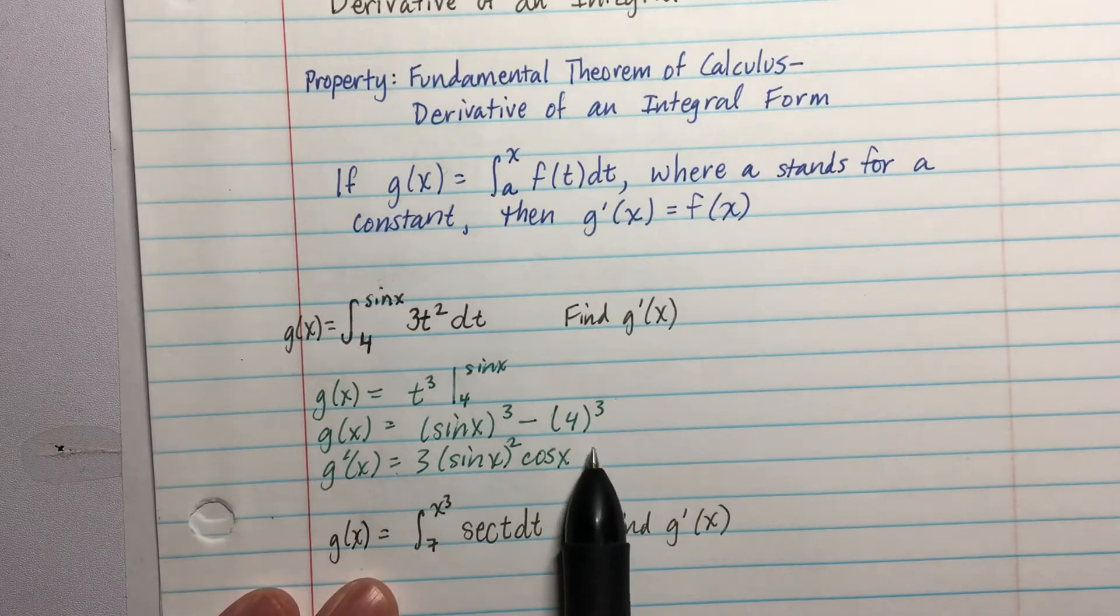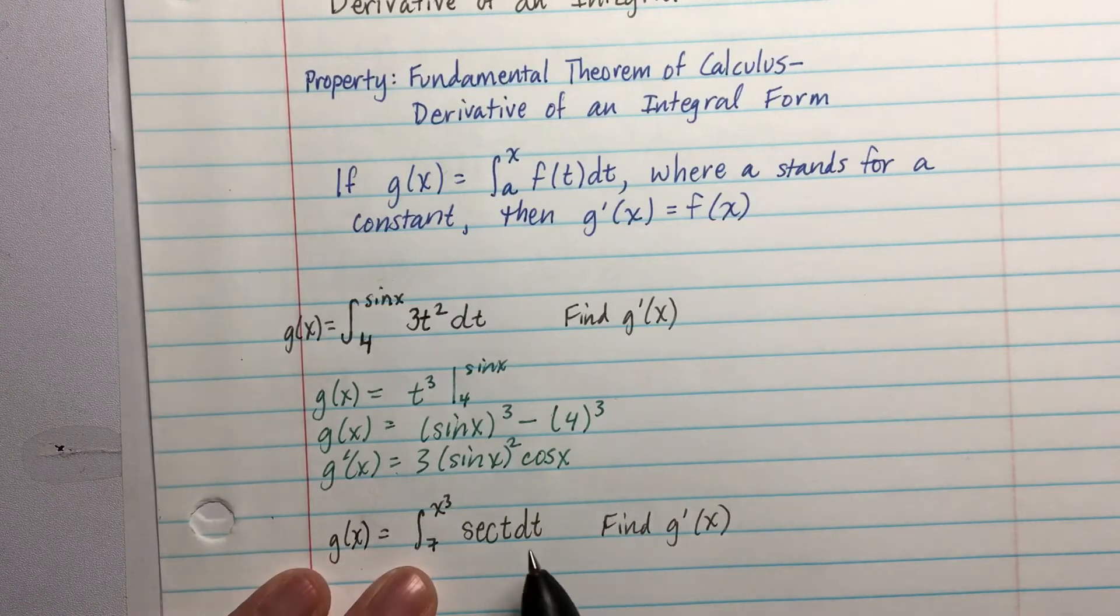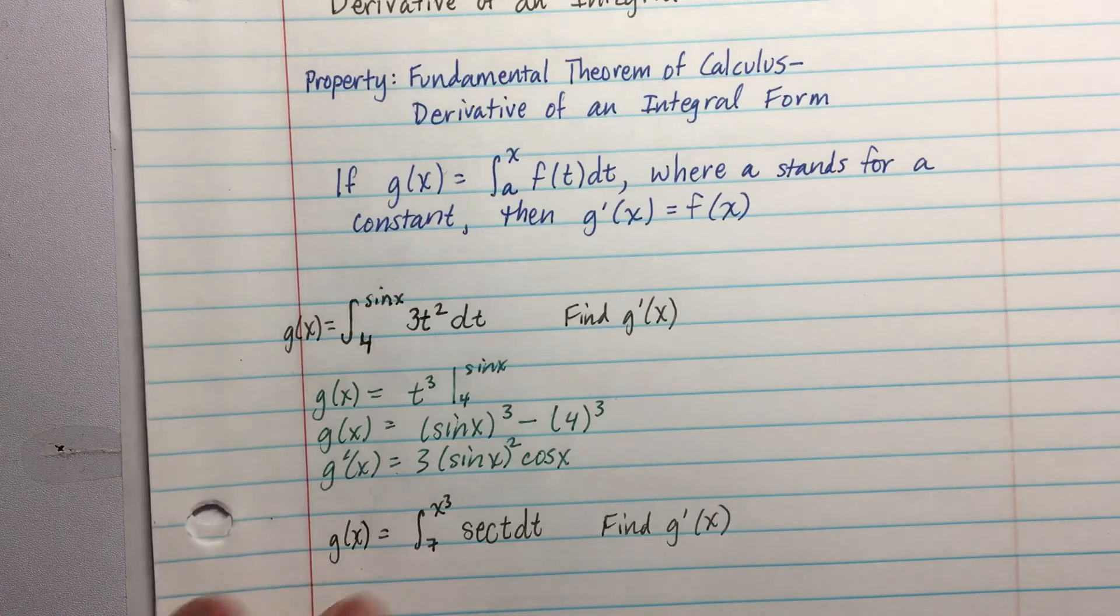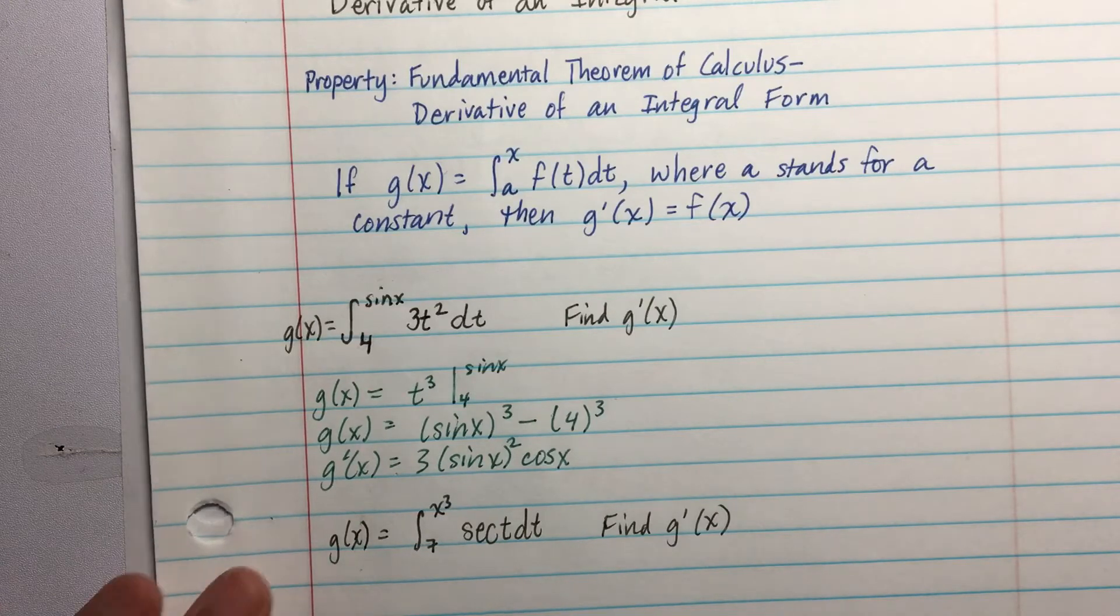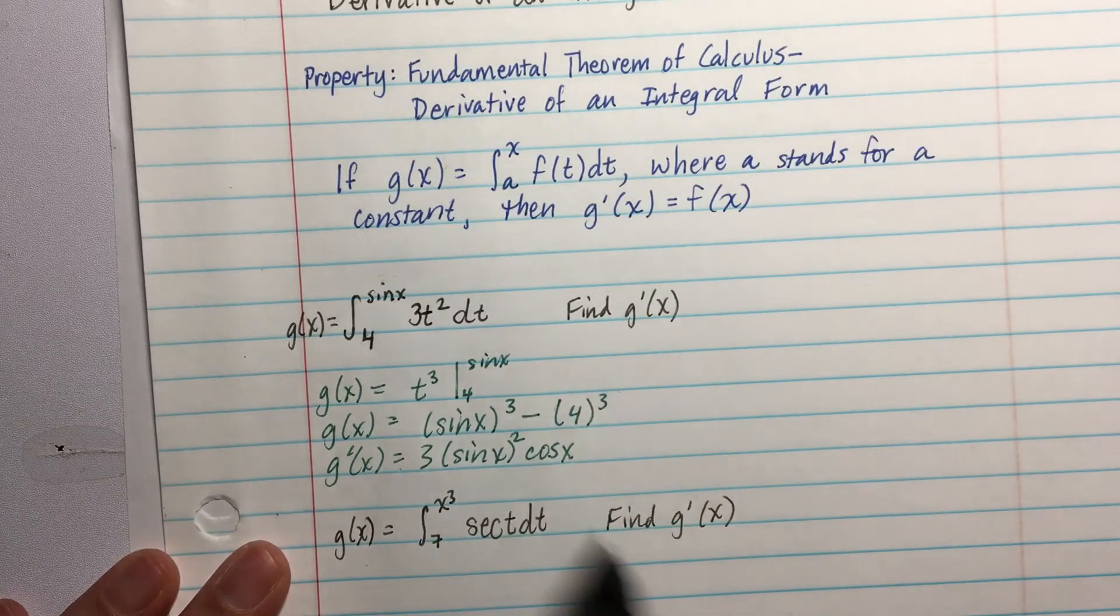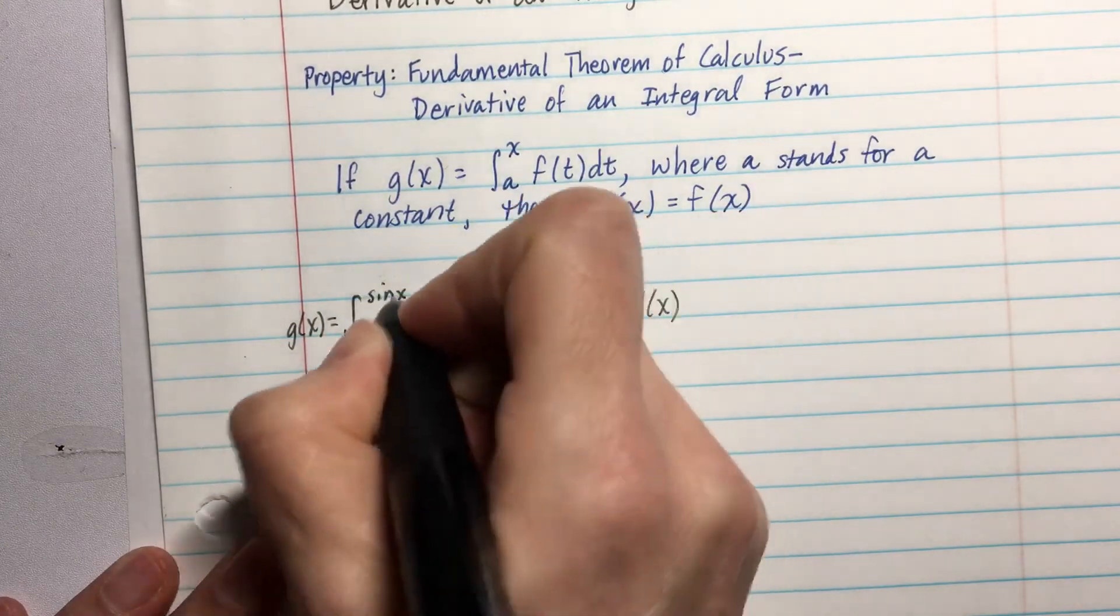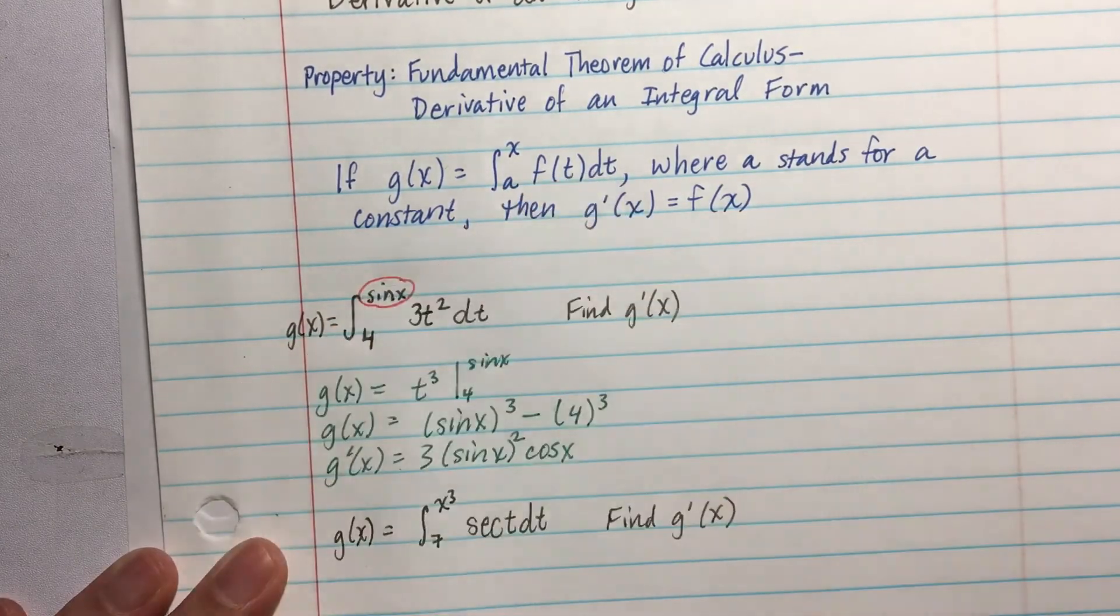So now the question is, is there a shortcut? Because it seems kind of weird to go integral then derive. So we're backing things up and just, yeah, seems silly. So look what we have here. Going back to the beginning, look where the sin(x) went.